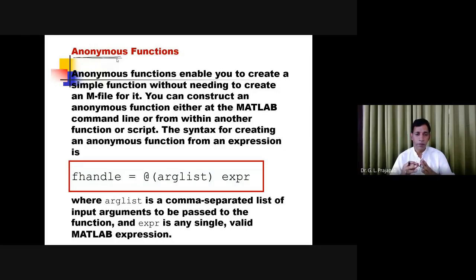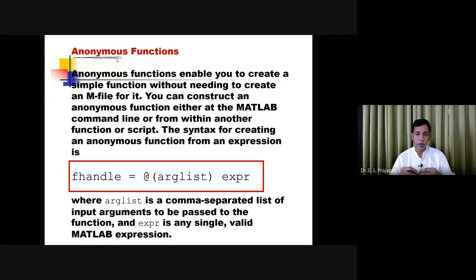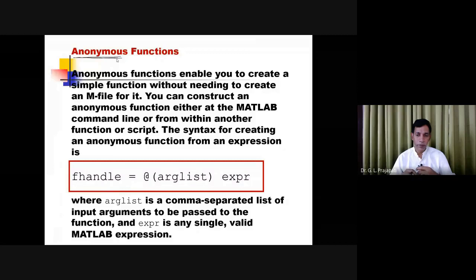Anonymous functions are very small — you can define one in only one line. This is useful when you are supposed to use the same expression again and again, or when the expression has operators or dot operators like those things. So to avoid mistakes from retyping again and again, you can create an anonymous function. Once you create it, whenever you want to evaluate the function, you can call it within the script file itself.